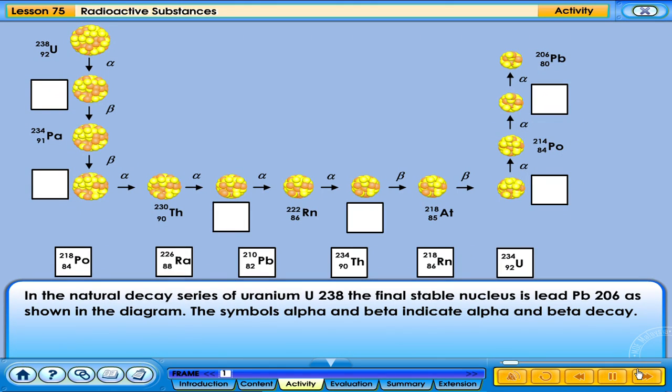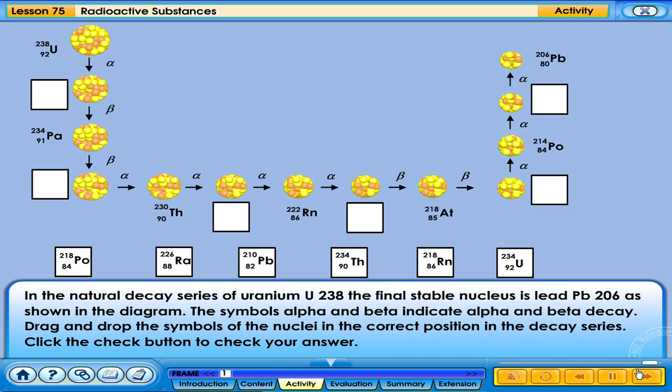In the natural decay series of uranium-238, the final stable nucleus is lead plumbum-206, as shown in the diagram. The symbols alpha and beta indicate alpha and beta decaying. Drag and drop the symbols of the nuclei in the correct position in the decay series. Click the check button to check your answer.